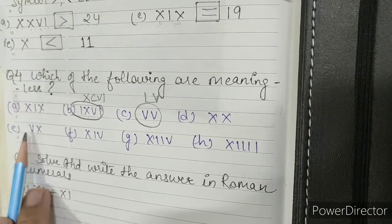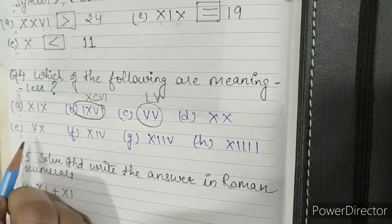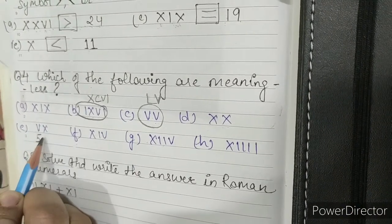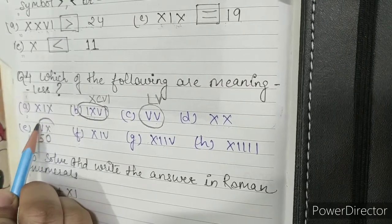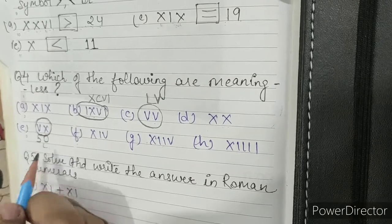Part E: VX. V is written as 5, X is written as 10. This is meaningless because 50 is written as L.